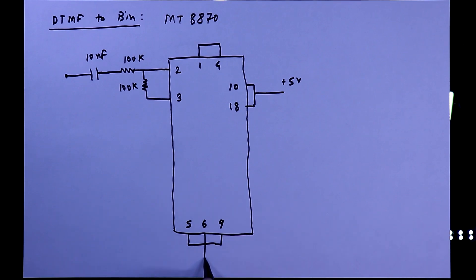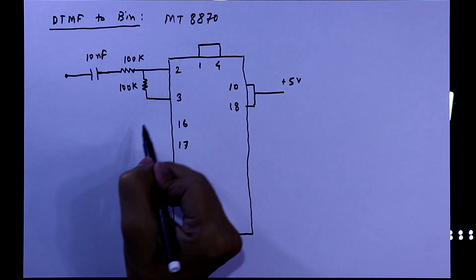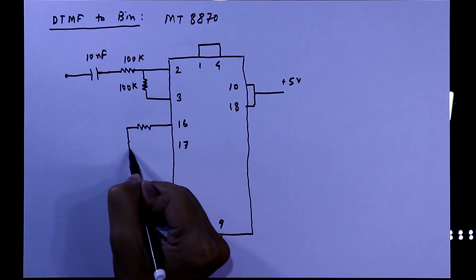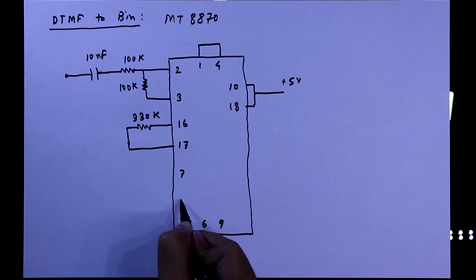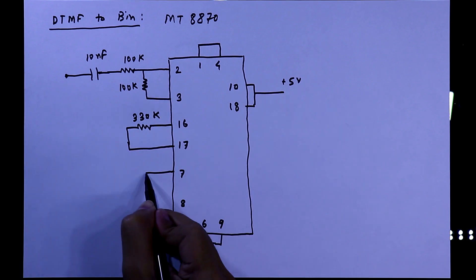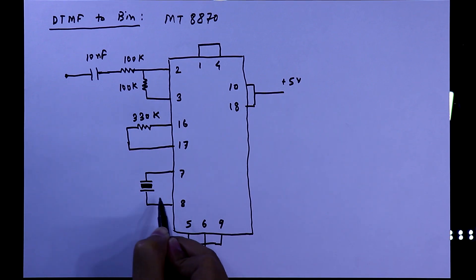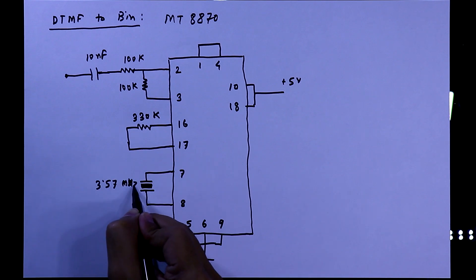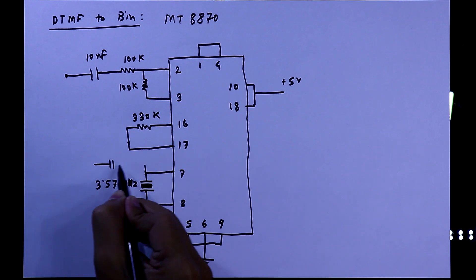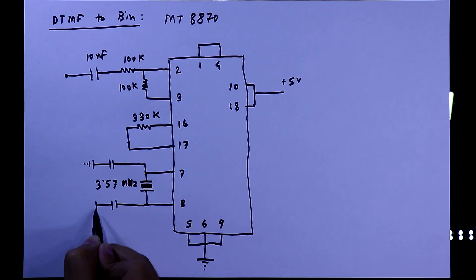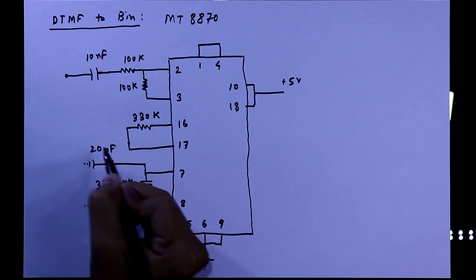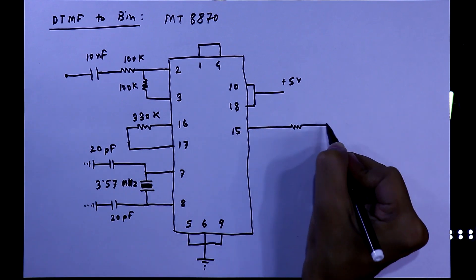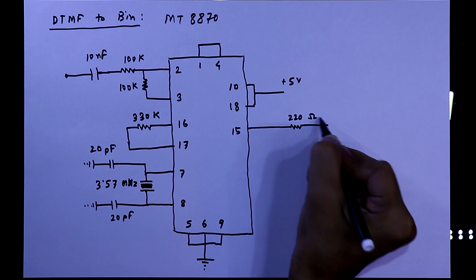Pin number 5, 6, and 9 — these three will be connected to ground. In between pin number 16 and 17 we have to connect a 330kΩ resistor. In between pin number 7 and 8 we have to connect the crystal oscillator, and with this we have to connect a 20pF capacitor.